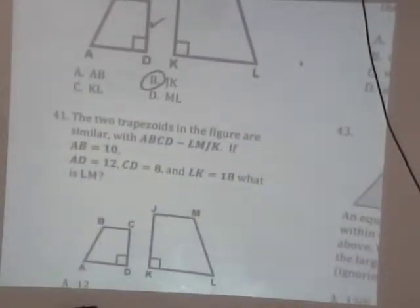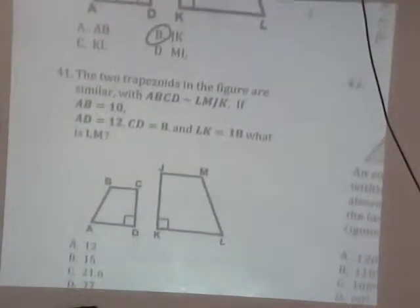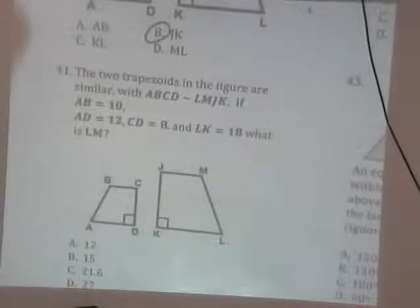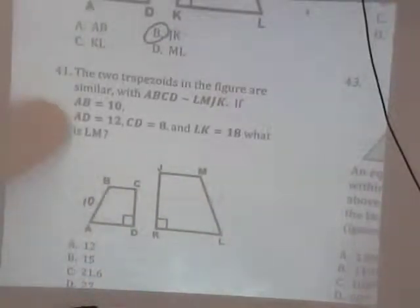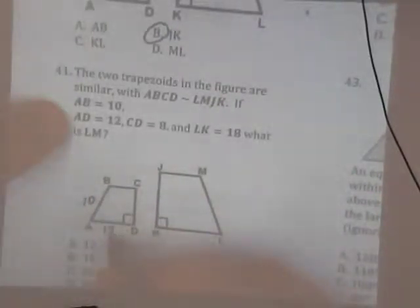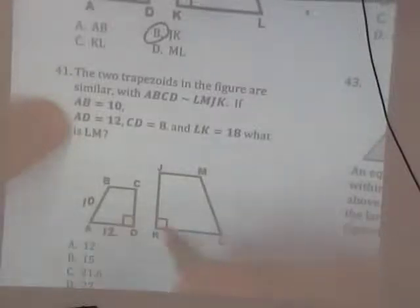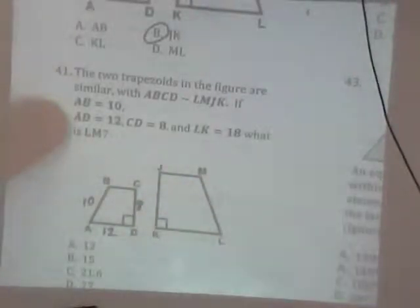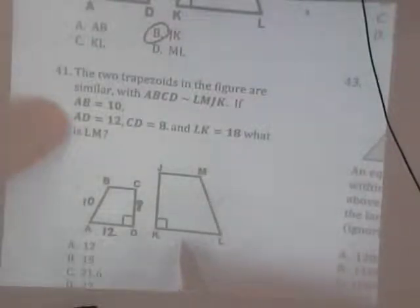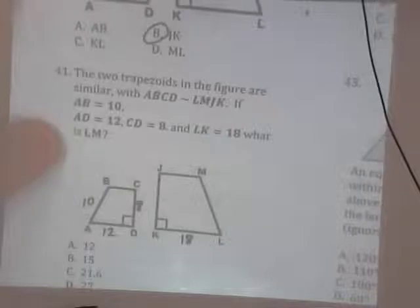Okay, next one. Two trapezoids in the figure are similar. If AB is 10, AD is 12, CD is 8, and LK is 18, what is LM? I want to know this angle here.